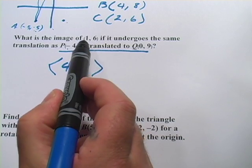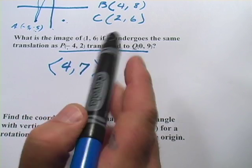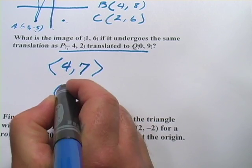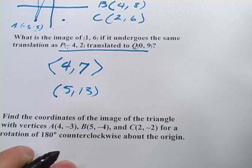Now we're going to apply that to (1, 6). So I'm simply adding 4 to the x, adding 7 to the y, and I get (5, 13). Not too difficult.